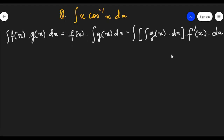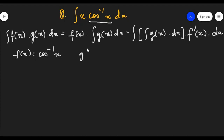The first function should be easier to differentiate. As the rule of thumb, whenever you have inverse trigonometric functions, you select that as your first function. So f(x) will be cos inverse x and g(x) will be x.